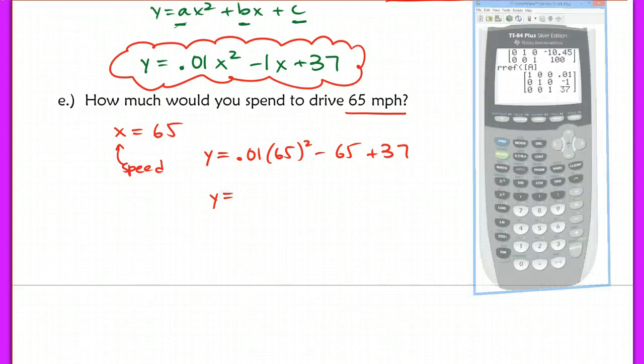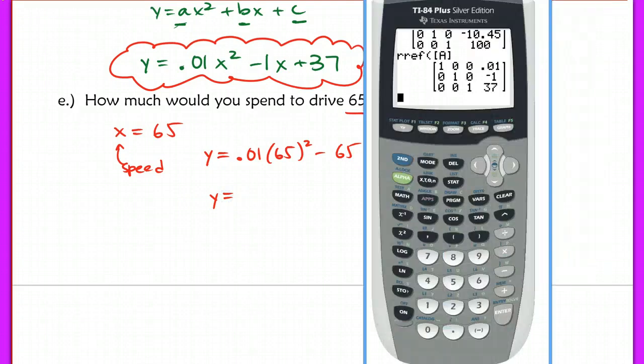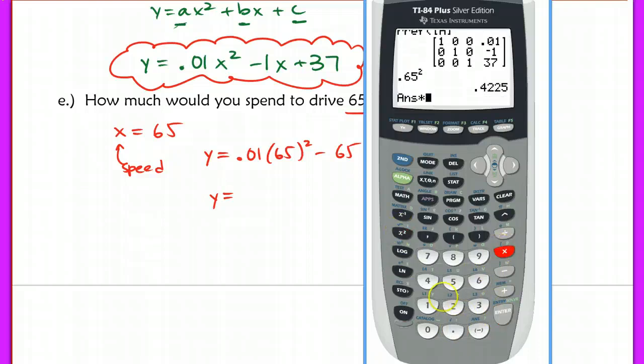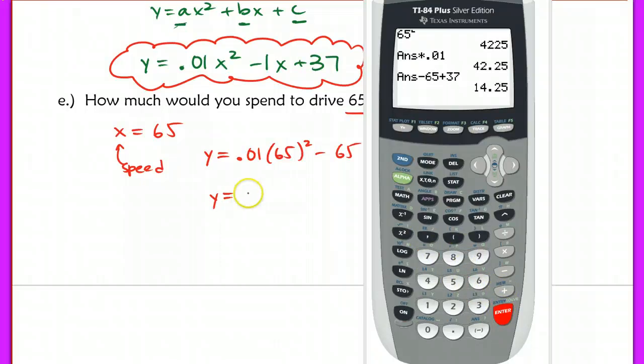When I do that in my calculator, I want to make sure that I'm entering 65 squared, either in parentheses or do that first. So 65 squared and times that by 0.01. I did not mean to put 0.65. Let's clear that out. So it's 65 squared times 0.01 and then minus 65 plus 37 and we get 14.25.